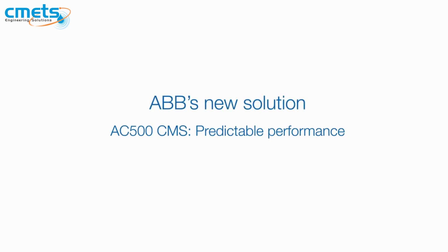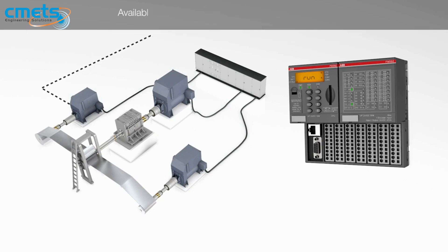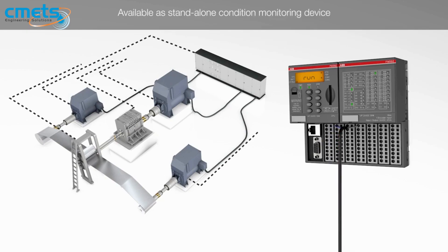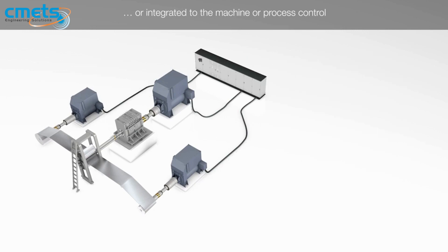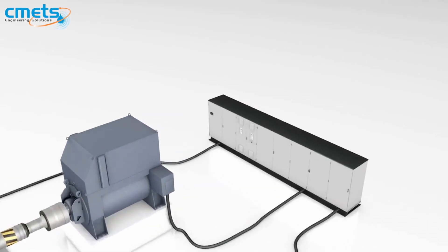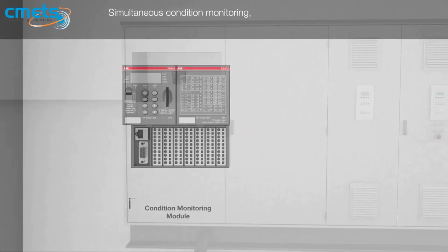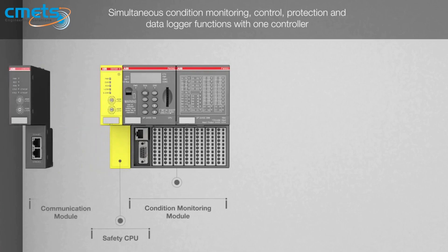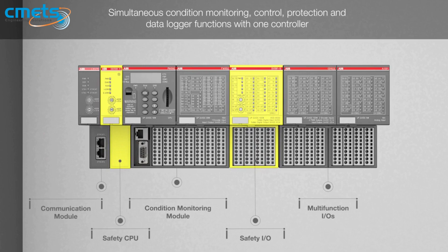Large benefits result when failures and shutdowns for manual work can be avoided by an online system like the AC500 CMS. The AC500 can be used as a standalone system — for example, also in retrofits — to continuously measure and protect. But it can also be integrated into the machine control to form a real online Industry 4.0 and IoT system. The scalable and modular AC500 platform allows several different use cases to be implemented efficiently in parallel.